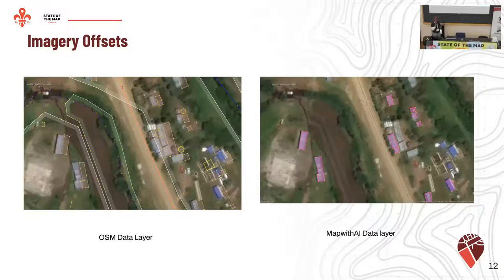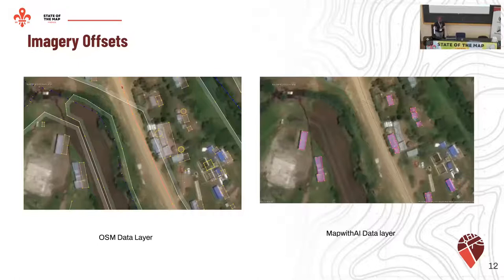However, in cases where we have imagery offset, the AI would still suggest that you use a building — for instance, we discovered that in places where mapping had actually already been done but there was an offset with the background imagery, the AI would still suggest that building. So if you're training your mappers, you need to be aware of this and make sure you question them on it.